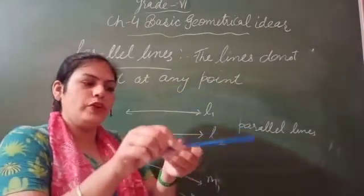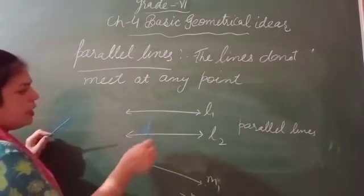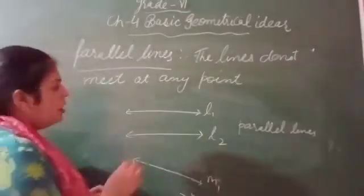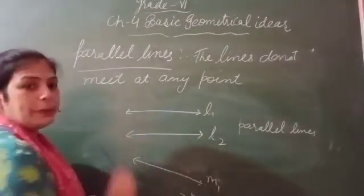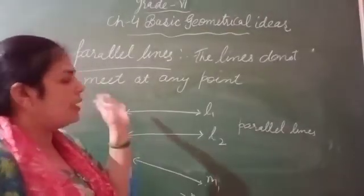Parallel lines have a width that at every point their distance is the same. At each point the distance remains the same. So these are parallel lines.